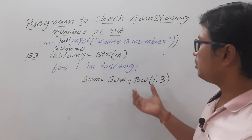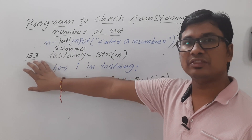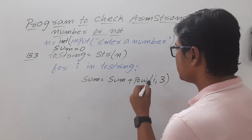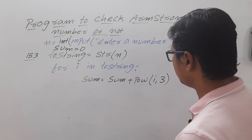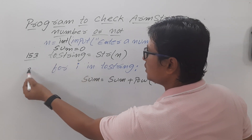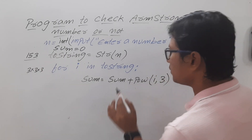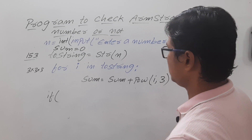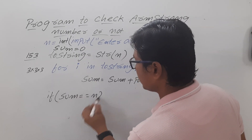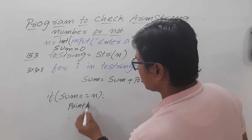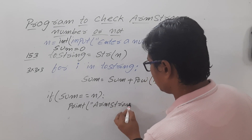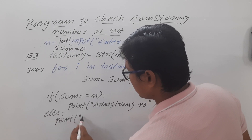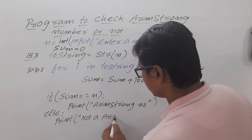I am considering that the user enters only three digits. If you want to run for any number of digits, you can compute the length of the string using the len() function and use that instead of 3. Then: if sum == n, print 'Armstrong number'.